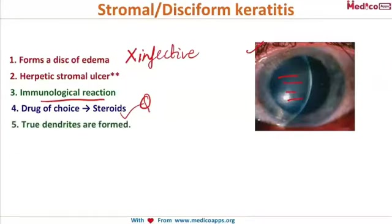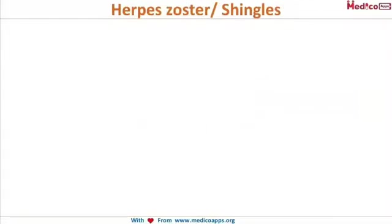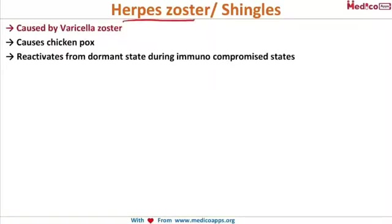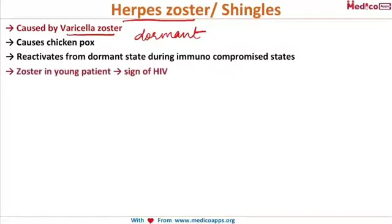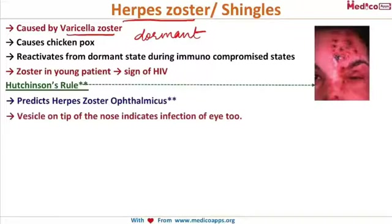Let's look at herpes zoster affecting the eye. Herpes zoster is the disease name, while the virus causing it is varicella zoster virus — the same virus that causes chickenpox in childhood. The virus remains dormant within the nerve roots and reactivates when there is immunological compromise. If herpes zoster occurs in a young patient, you should suspect HIV, since elderly patients or those on cancer chemotherapy are obviously immunocompromised, but a young patient warrants an HIV workup.